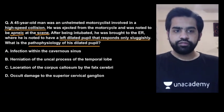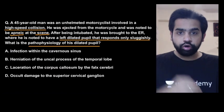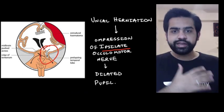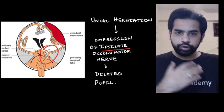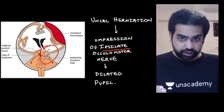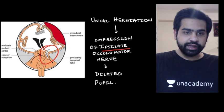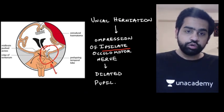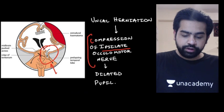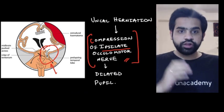The cause is uncal herniation. There is herniation of the uncal process of the temporal lobe which is compressing the oculomotor nerve. The EDH or SDH causes pressure over the brain, and the uncal process herniates through the tentorium cerebelli downward, compressing the ipsilateral oculomotor nerve, which causes the patient's pupil to become dilated.